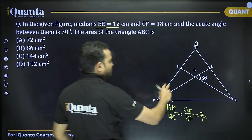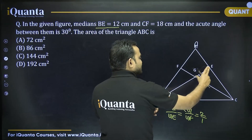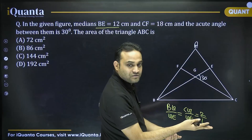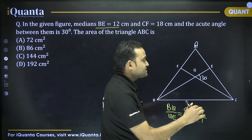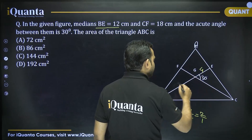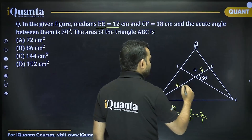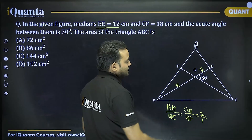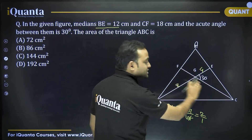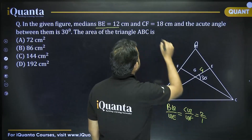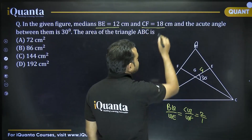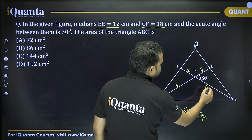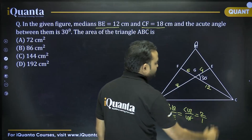If BE is equal to 12, then setting 3x = 12 gives x = 4, so GE = 4 and BG = 8. Similarly, GF is one-third of CF, and CF is 18, so GF = 6 and CG = 12.